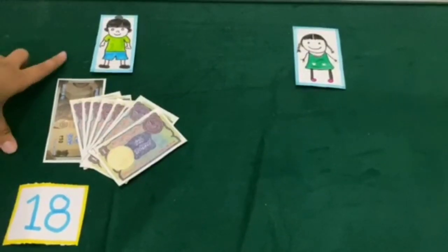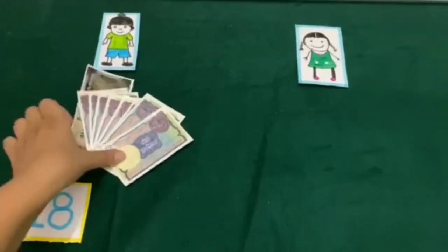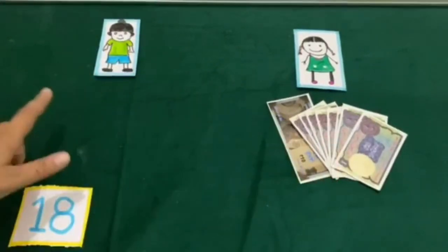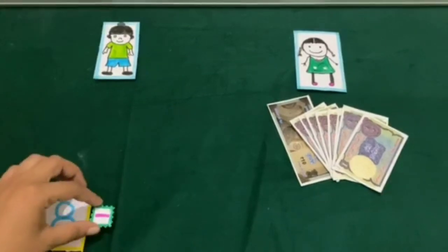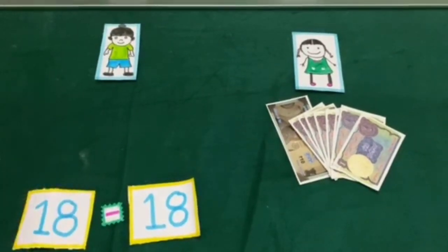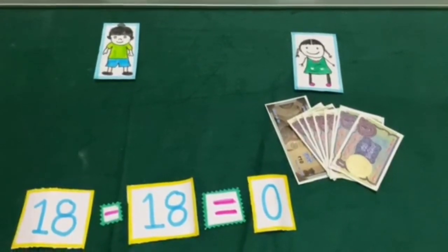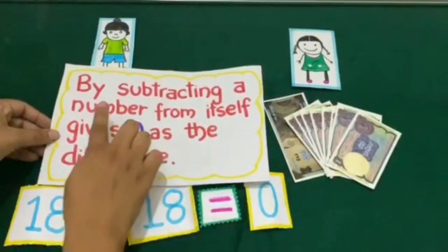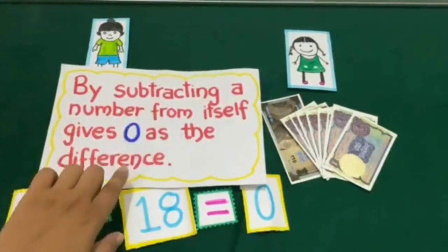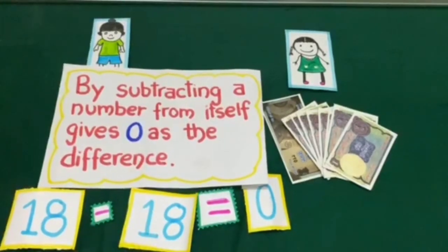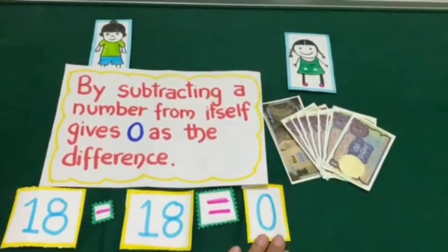Now Parmeet has 18 rupees and he gave 18 rupees to his sister Rusleene. We can see Parmeet is left with no money, so 18 minus 18 is equal to 0. Now we have learnt that by subtracting a number from itself, we get 0 as the difference. As 18 is subtracted from 18, the answer we get is 0.